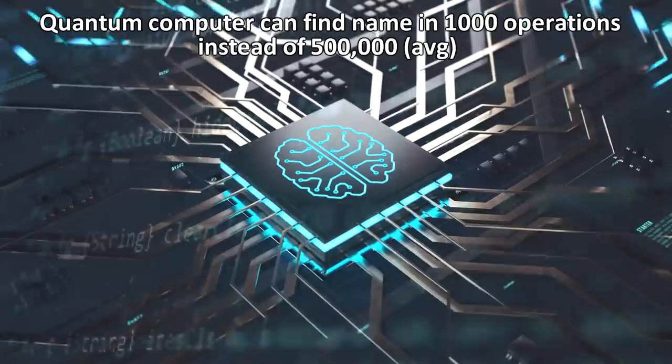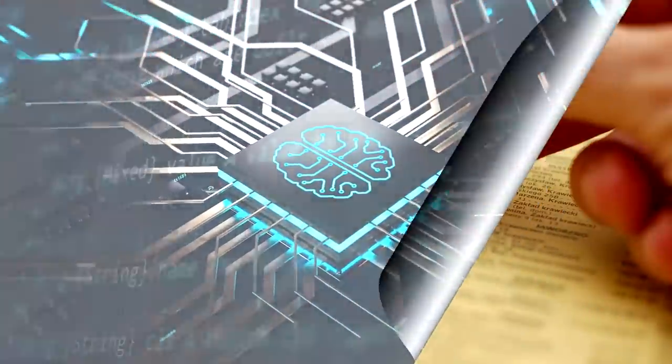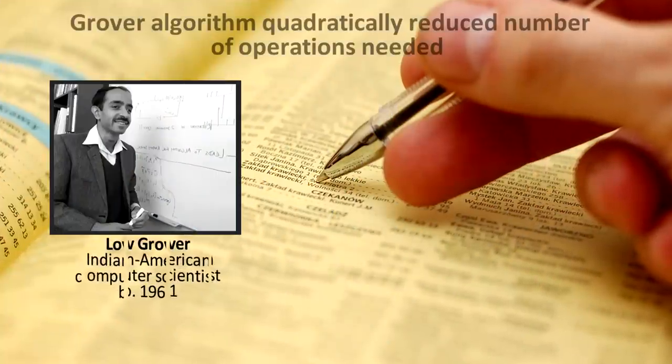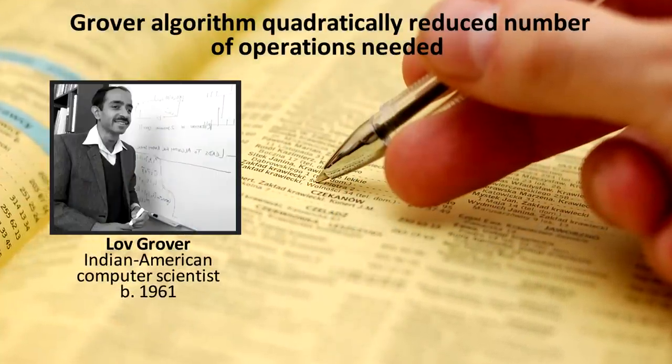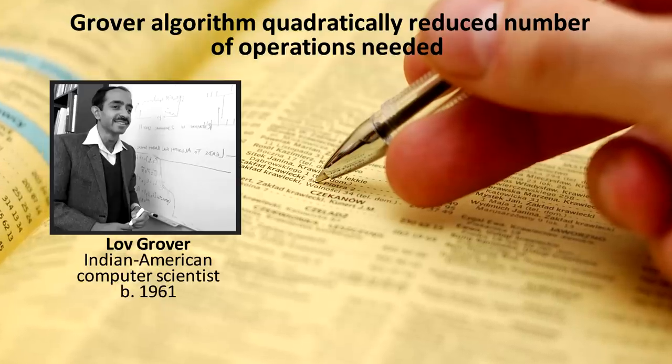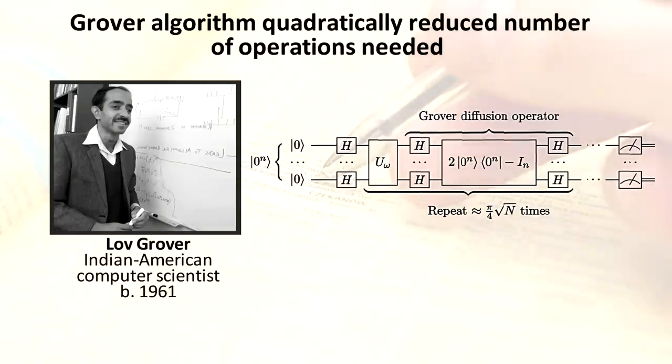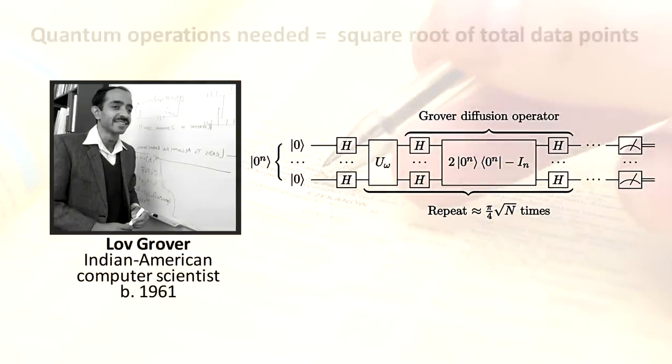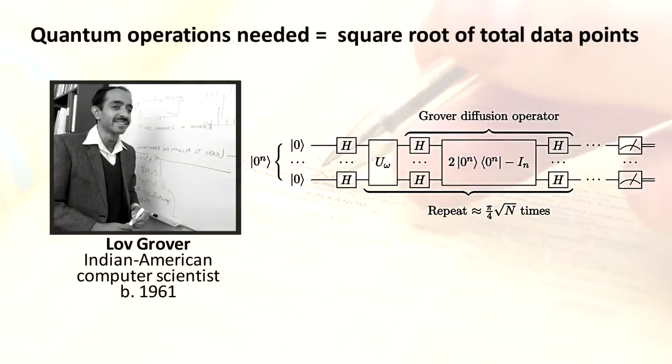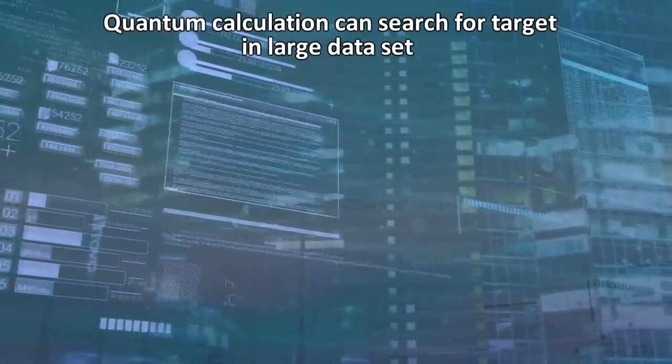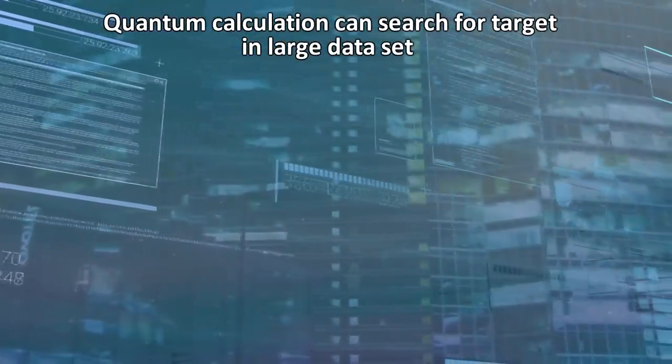A thousand is the square root of a million. Where does this number come from? Grover in 1996 developed a quantum algorithm that could quadratically reduce the number of operations needed to find a unique entry. Other scientists proved that any quantum solution for unstructured searches, like the phone book data problem, would only need to evaluate the square root of the total number of data points.